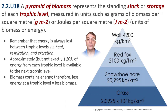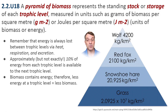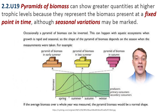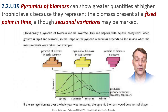A pyramid of biomass represents the total mass of organisms at each trophic level, measured in units like grams per square meter. These typically decrease at higher levels, but can occasionally show greater quantities at higher trophic levels if measured at a specific point in time — like during winter months when producers in temperate or polar zones might be dormant. Pyramids of biomass can appear inverted during certain seasons, especially in aquatic ecosystems. However, if measured over an entire year, the pyramid would show the expected decreasing pattern.